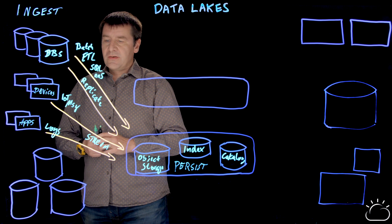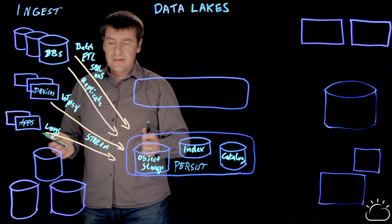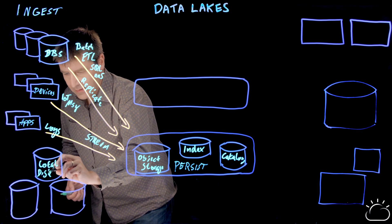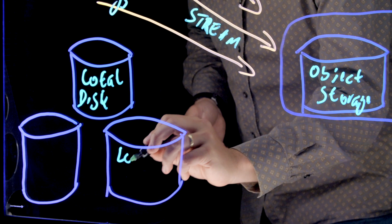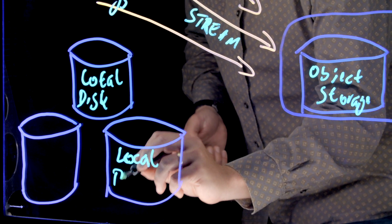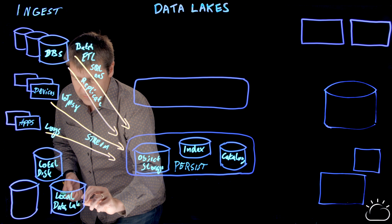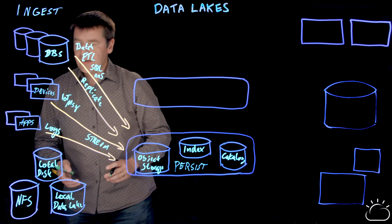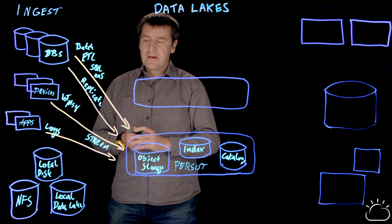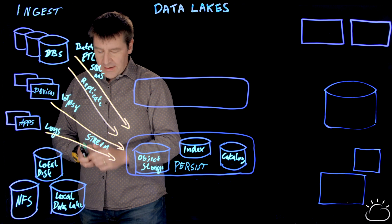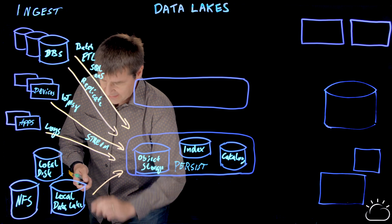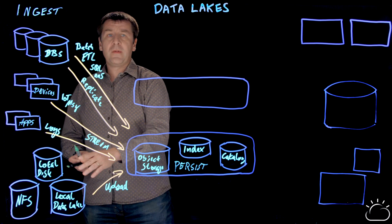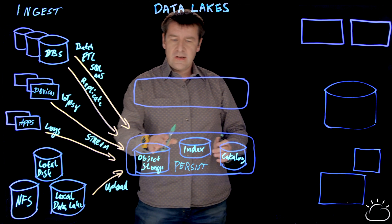Finally, you may have data already sitting on local disks — maybe on your own machine. You may have a local data lake, a classical data lake not in the cloud. Typically these are Hadoop clusters on-premise in your enterprise, or it can be as simple as NFS shares used in your team to store certain data. To get this to the cloud data lake, you need an upload mechanism — an efficient mechanism to upload data from on-premises to the object storage in the cloud.